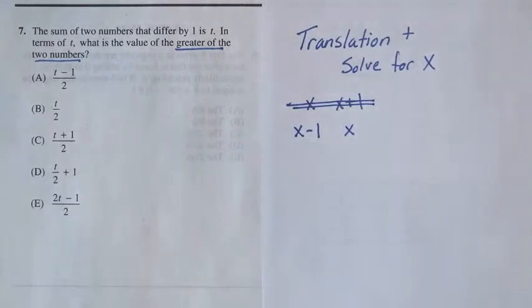They're still two numbers that differ by one, but that way when you solve for x, you're solving for the greater number, the one you're interested in.